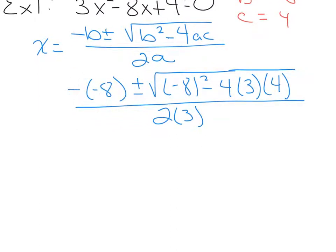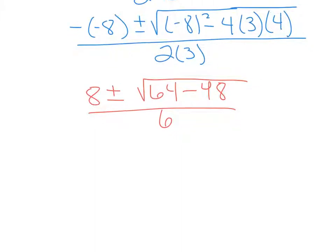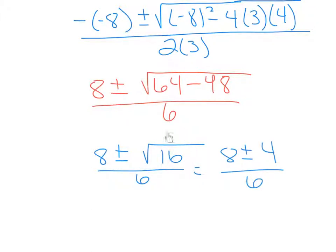The two negatives simplify to make a positive, giving us 8. Negative 8 squared is positive 64. Looking at the signs for the next part: negative times positive times positive makes a negative, so I write that down. Then 4 times 3 is 12, and 12 times 4 is 48. In the denominator, 2 times 3 is 6. So we have 8 plus or minus the square root of 64 minus 48, over 6. And 64 minus 48 is 16.